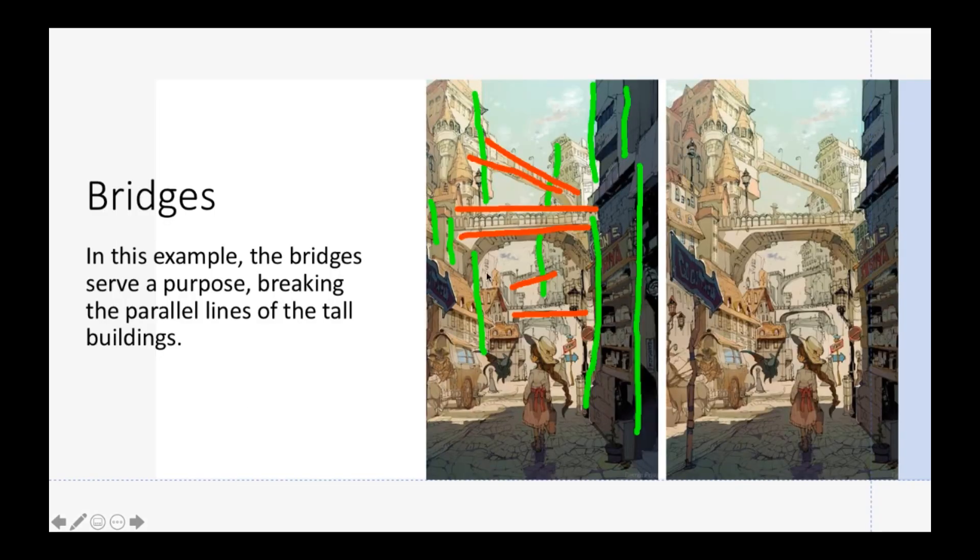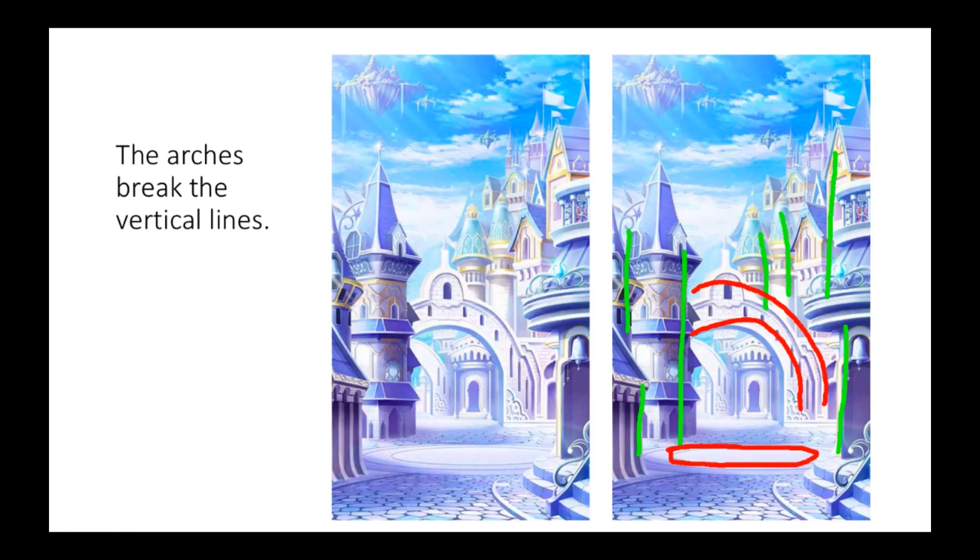Here's the bridges. In this example, the bridges serve a purpose, breaking the parallel lines of the tall building. So these tall buildings are all very vertical. It's just a big vertical experience where this little person appears in the front and everything's just over towering her. And then you have these bridges. Here's an arch too, which makes it a bit more interesting. This one makes it very interesting because it's more diagonal on this one too. So they kind of break it down and then it makes it more interesting to look at.